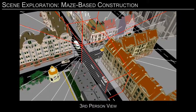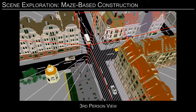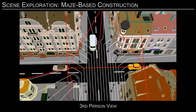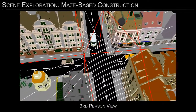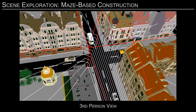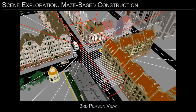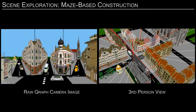We have developed a maze-based graph camera constructor that distributes the rays reaching the intersection to each of the right, forward and left outgoing street segments. The resulting raw graph camera image samples the left and right street segments well.